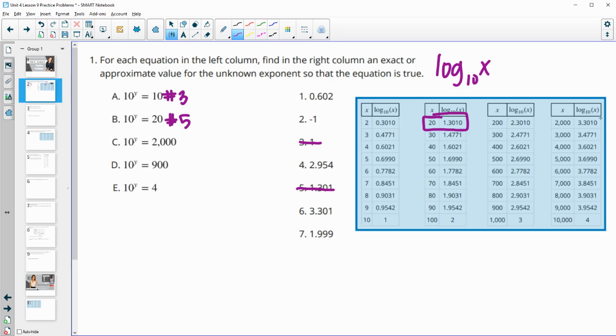For this one, we'll look to 2,000. So 2,000 is 10 to this power, 3.301. So that's number six.